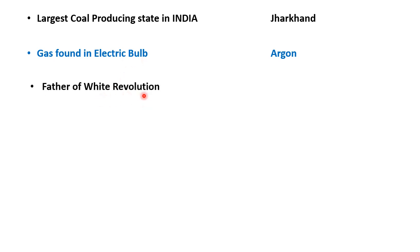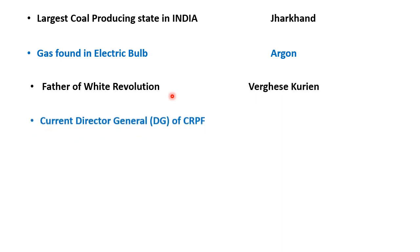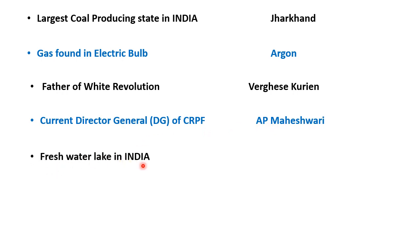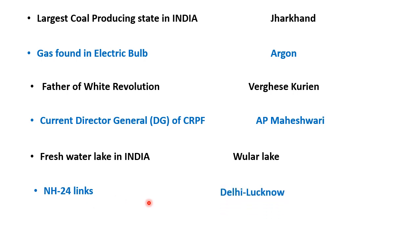Father of white revolution — green, blue, white revolution के names याद करें। White revolution किससे associated है? Father of white revolution is Varghese Kurien. Current Director General of CRPF — current DG कौन है CRPF की? A.P. Maheshwari. Freshwater Lake in India — Wular Lake freshwater lake है India की. NH24 किन दो states को जोड़ती है? Delhi और Lucknow.